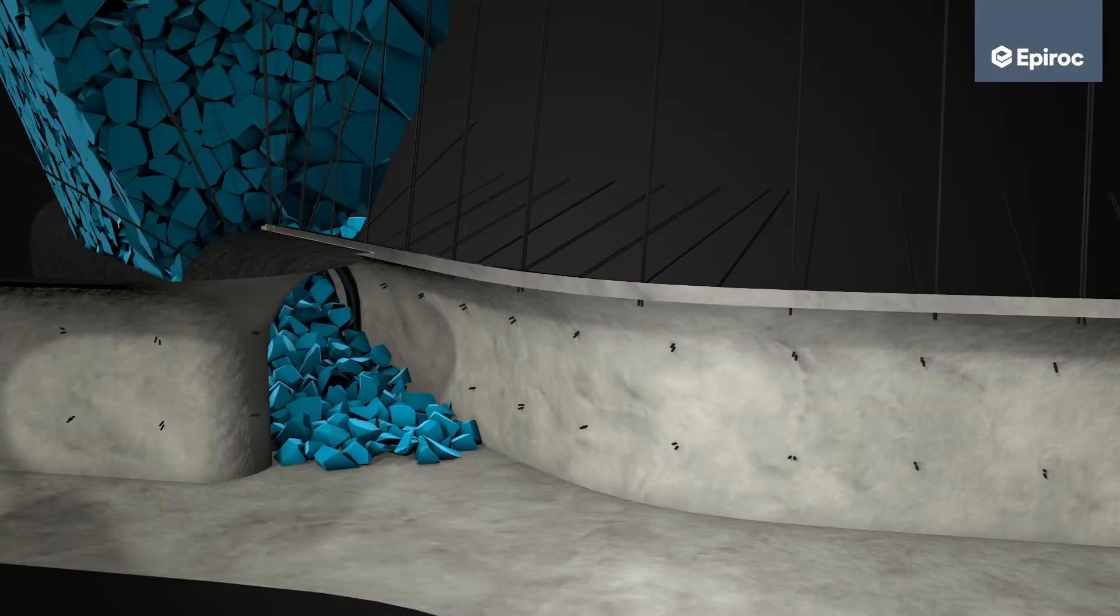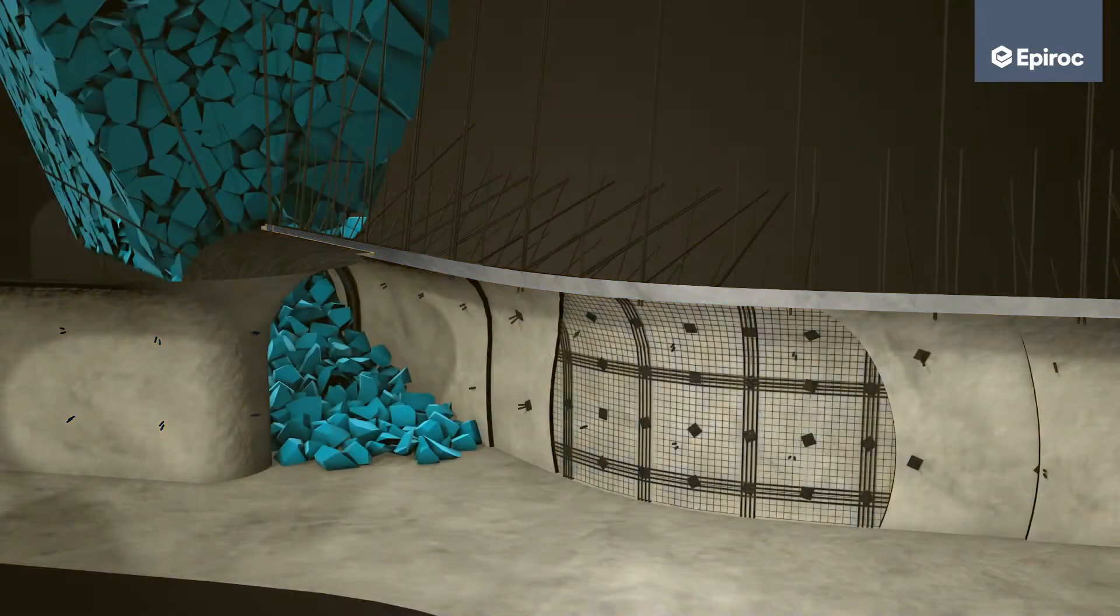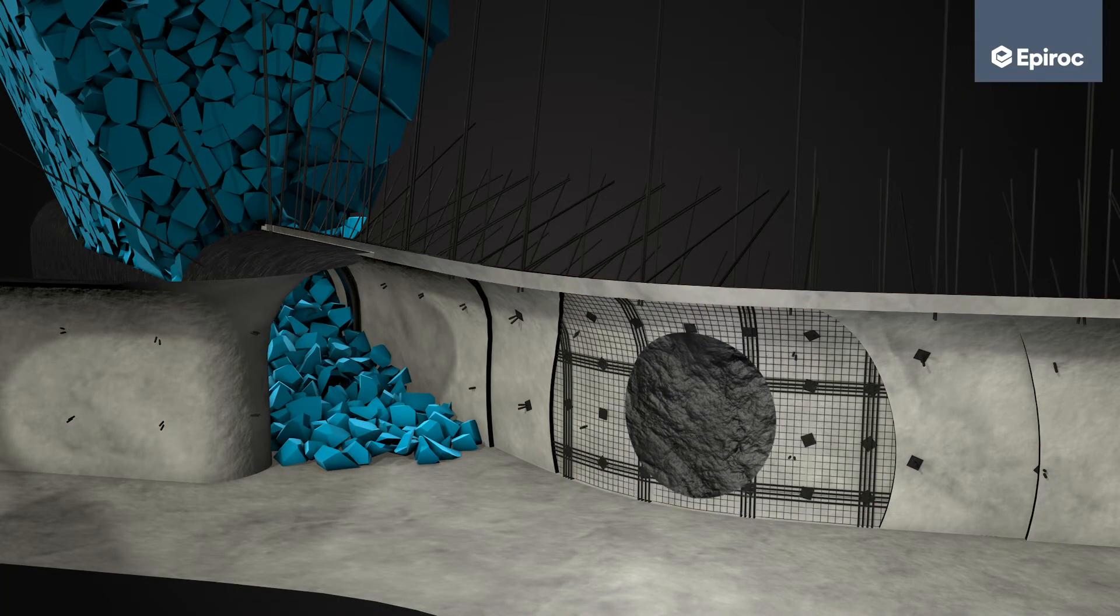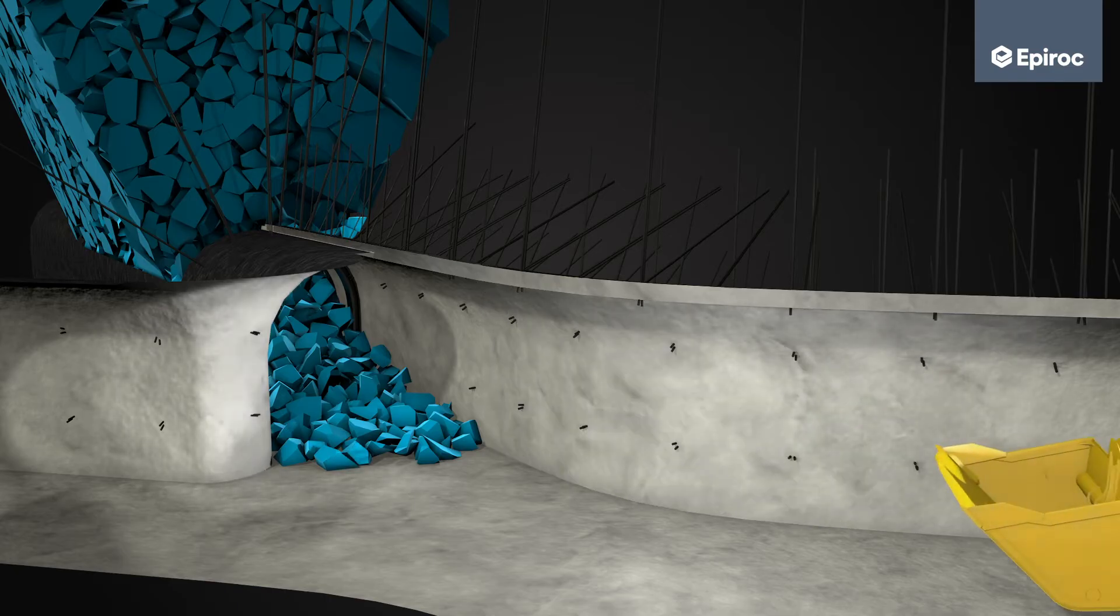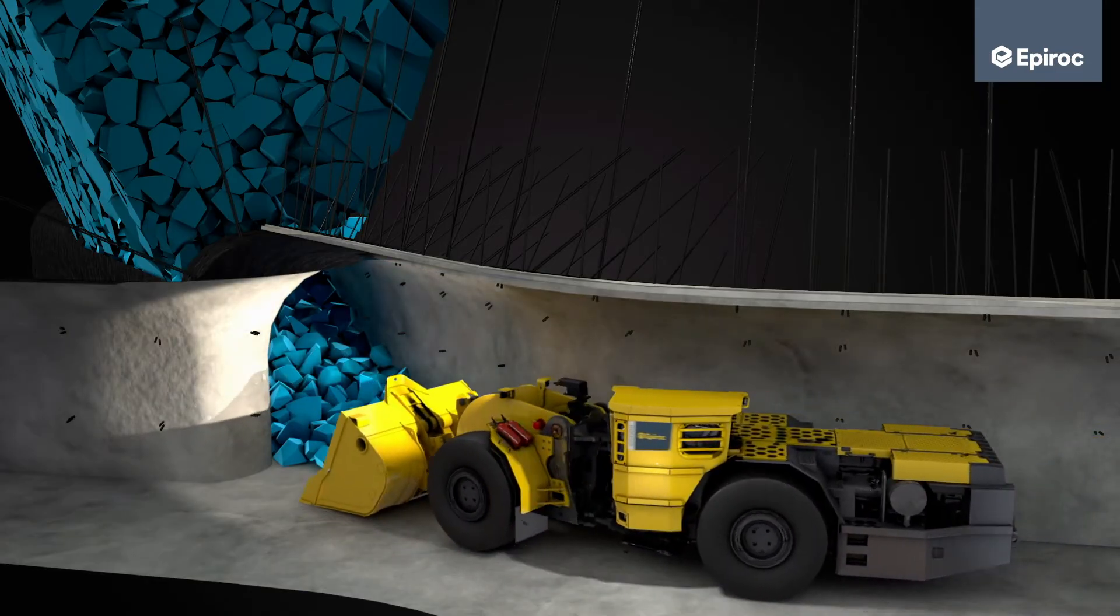Substantial rock reinforcement, such as steel arches, sprayed concrete, cable bolts, rock bolts, steel mesh and straps, are usually required due to several factors associated with block caving, including extreme rock stress changes and a long production period.